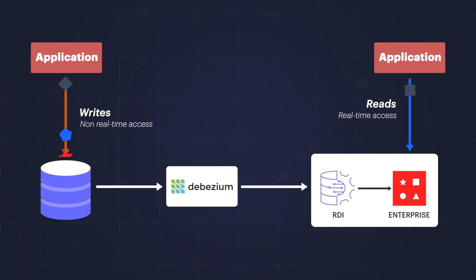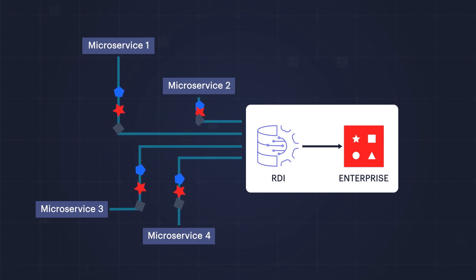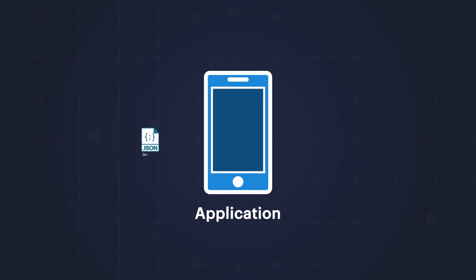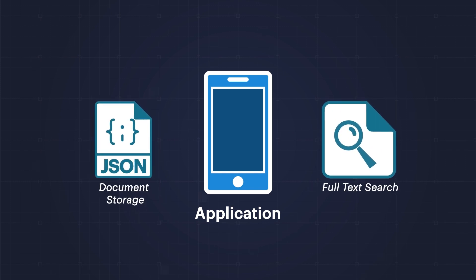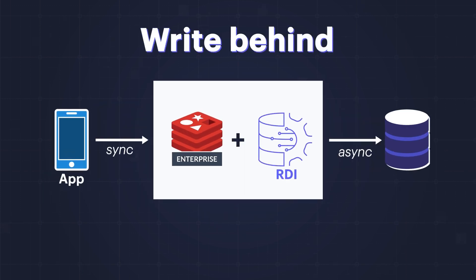Ingest isn't the only use case that RDI was built for. It can also accelerate slow database queries. RDI can also mirror session and reference data to microservices, reducing bottlenecks of services waiting for frequently requested data. RDI can also modernize application data models, enabling document storage and full-text search without replacing the backend RDBMS. Lastly, RDI supports Write-Behind, which enables the ability to write data to Redis and achieve fast eventual consistency in the database — used commonly for fast processing of transactions, for example.